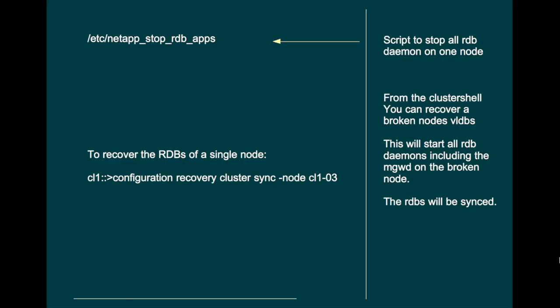In the next demo, we will stop all the daemons on node 3 by running a script in the system shell called /etc/netapp/stop_rdb_apps. This stops all daemons related to the RDB rings, so that node will no longer be functional in any of the RDB rings. To fix this, we go to the cluster shell and recover the broken node by running 'configuration recovery cluster sync', specifying that we want to synchronize node 3 with the healthy rings on node 1 and node 2.